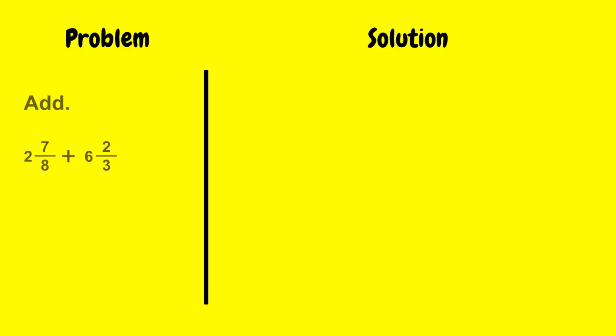So let's look at a problem. Here it says add 2 and 7 eighths plus 6 and 2 thirds. So let's do that. I'm going to find my least common denominator for 8 and 3. So I'm going to multiply this by 3 and this one by 3, this by 8, and this by 8. And if you're not sure how I got these numbers, watch the video with the link at the beginning of this video. And then I'm going to rewrite this and get 2 and 21 over 24 plus 6 and 16 over 24.